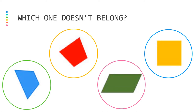Next let's take a look at all four of these images. Pick one and explain why it doesn't belong. There's no right or wrong answer as long as you can justify your answer. Take a second and explain why one of the shapes doesn't belong with the other three.